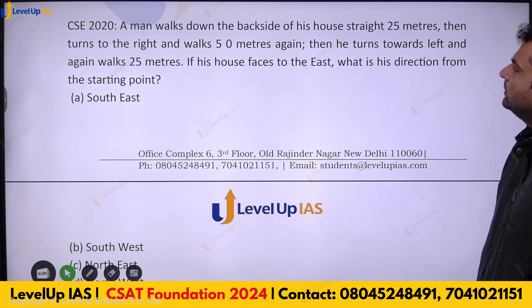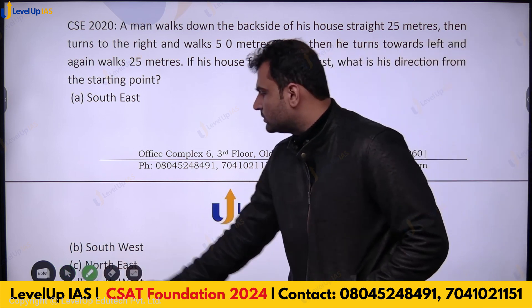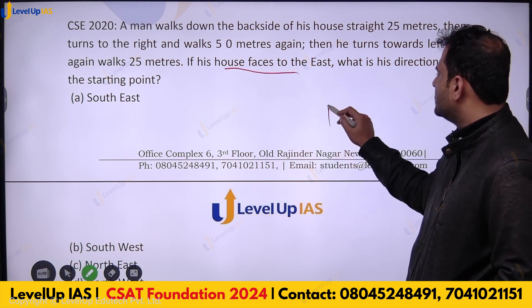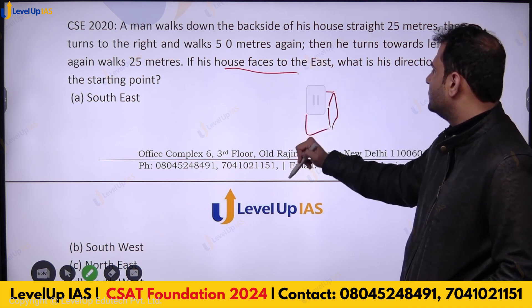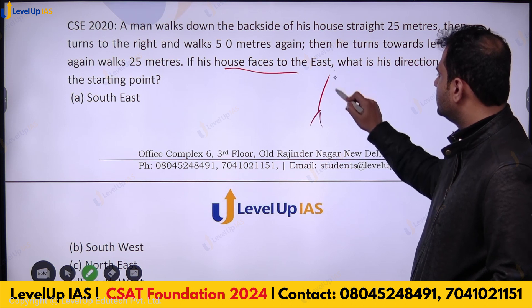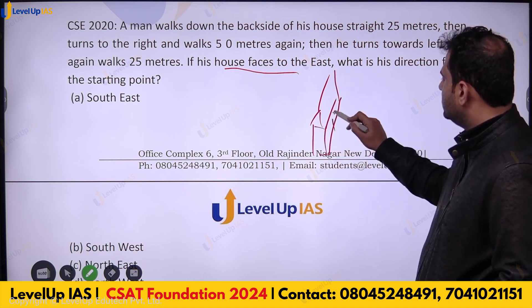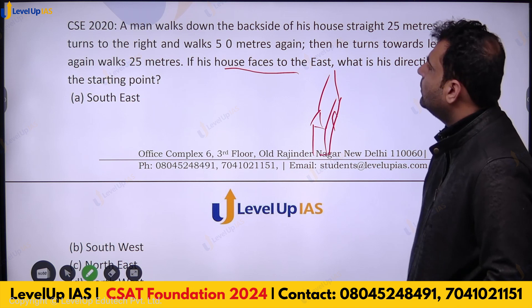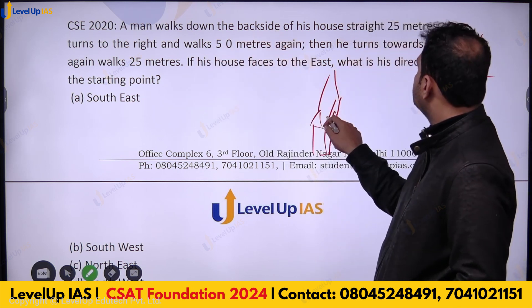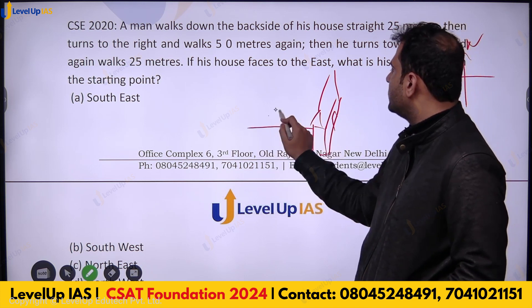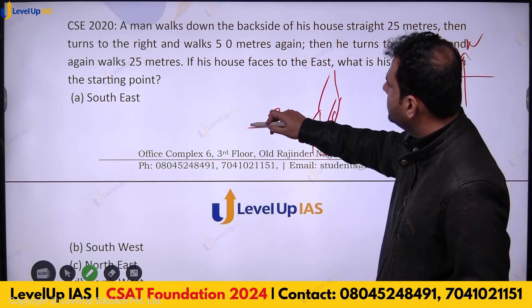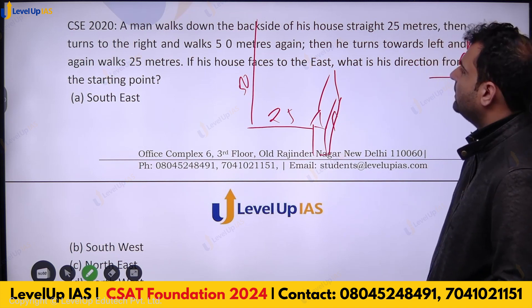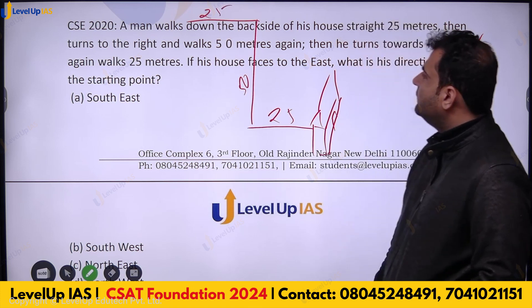Next: A man walks down the backside of his house straight 25 meters. The house faces east — the door faces east. He walks 25 meters on the backside (westward), then turns to his right and walks 50 meters, then turns left and walks 25 meters. If his house faces east, what is his direction from the starting point?